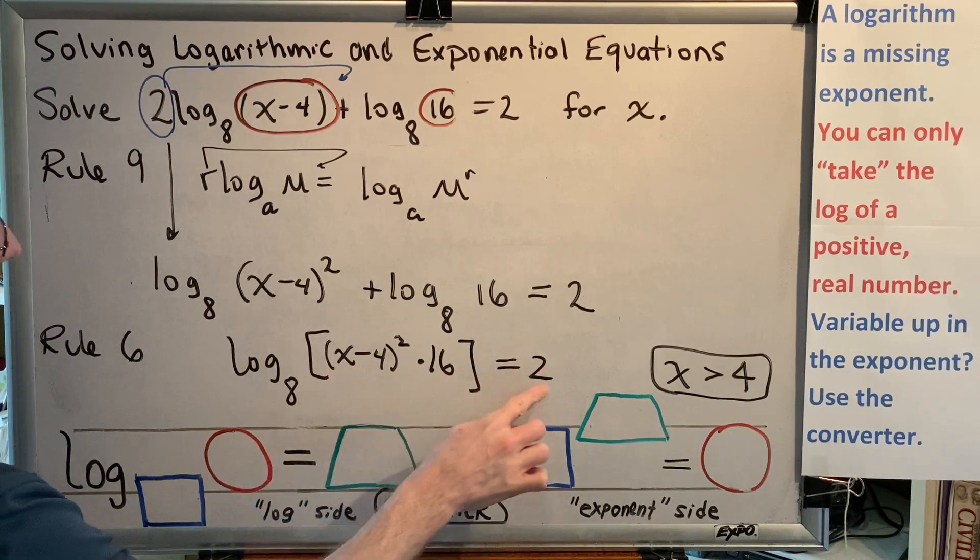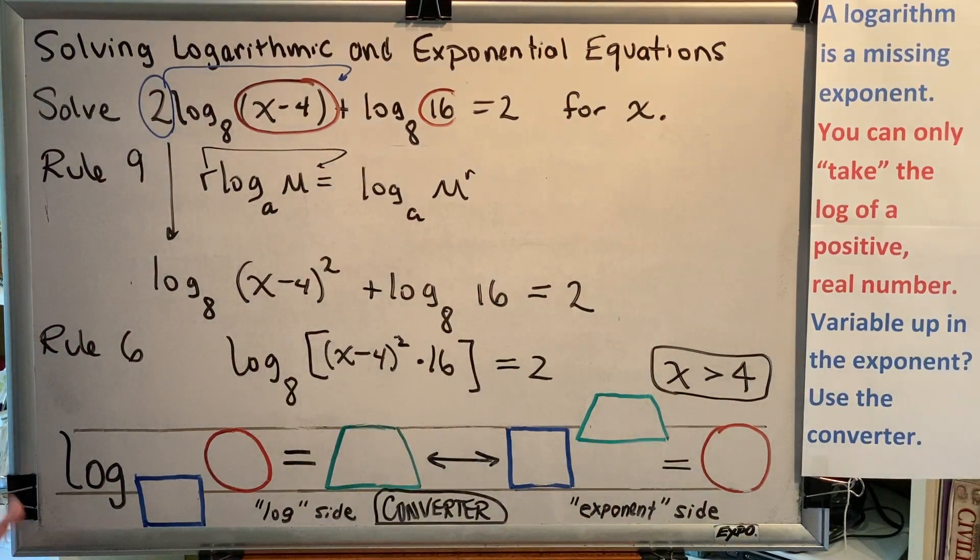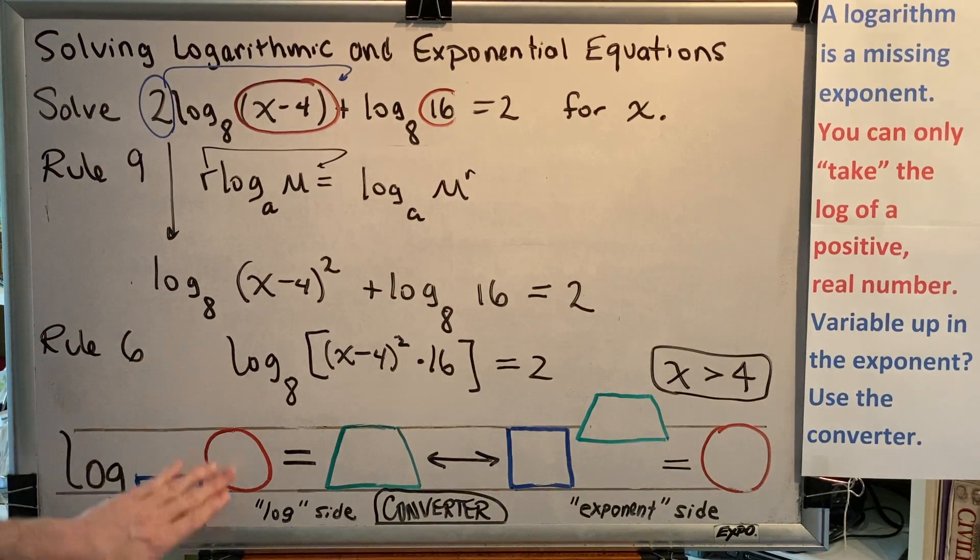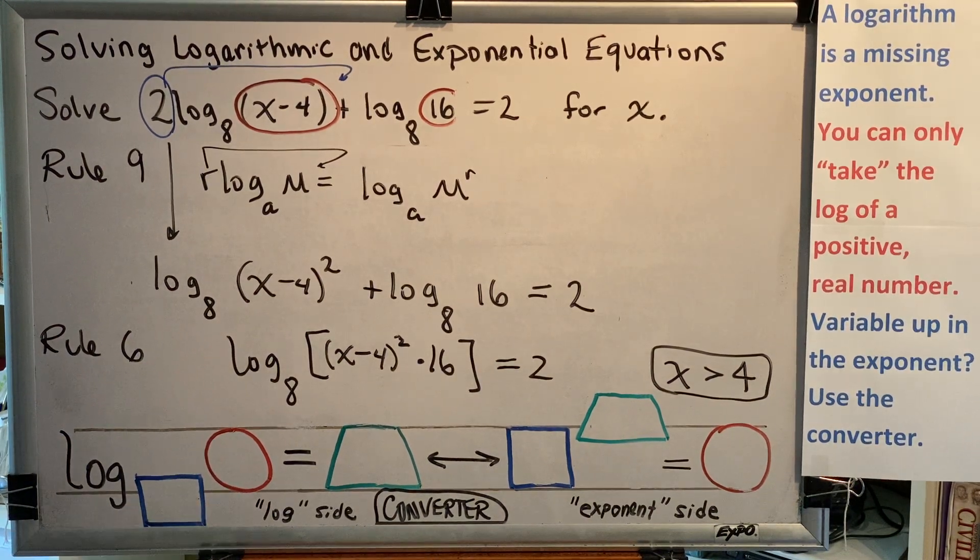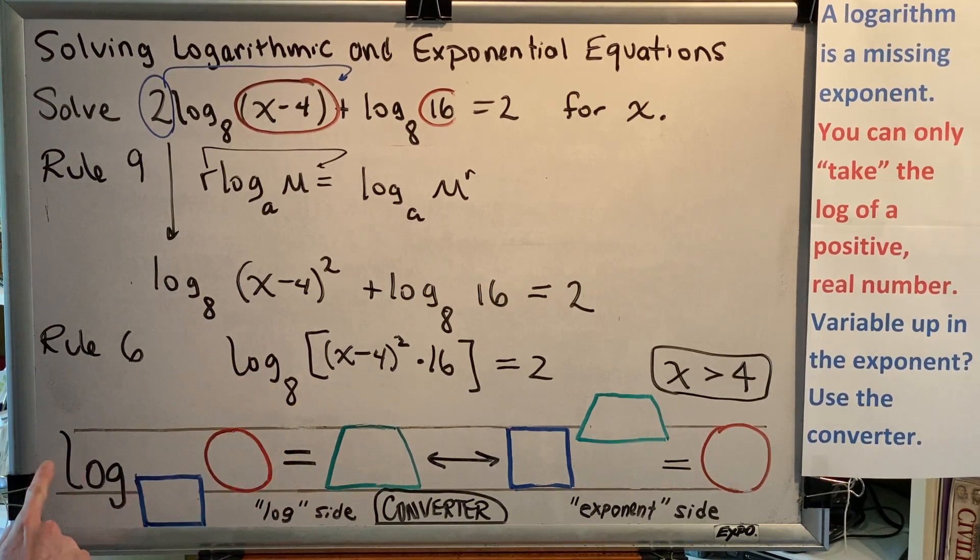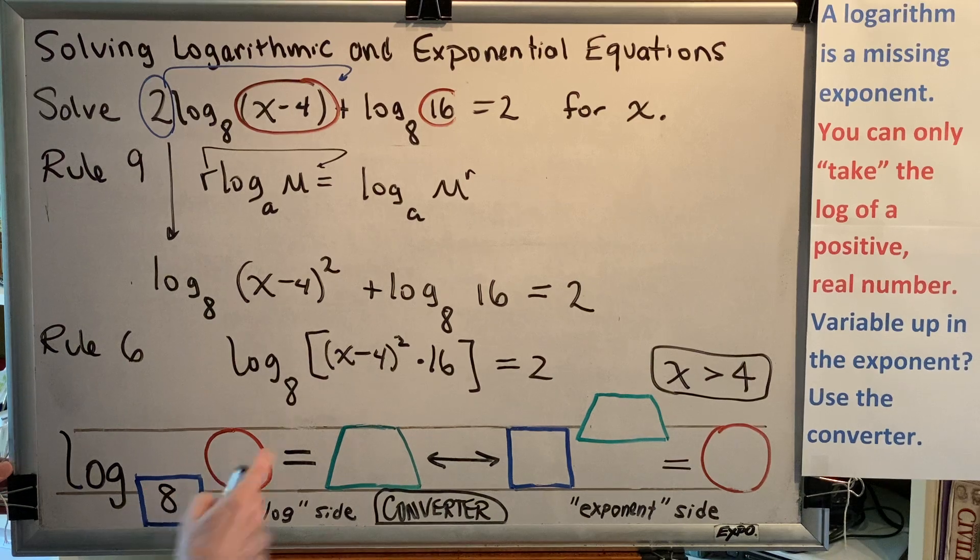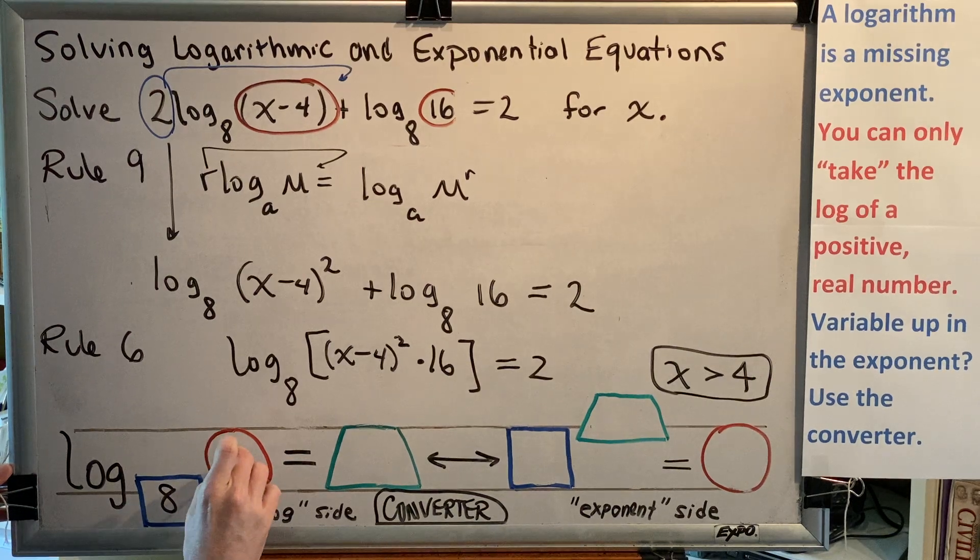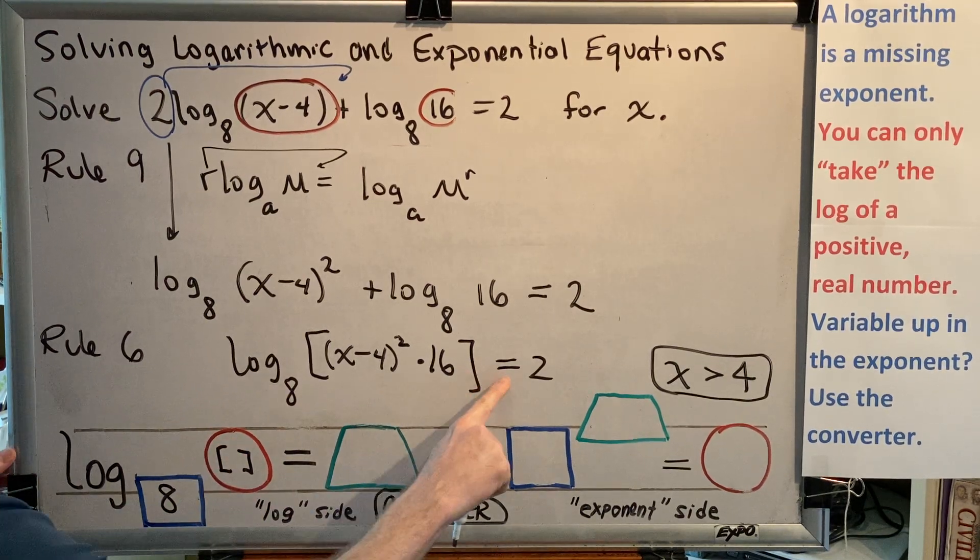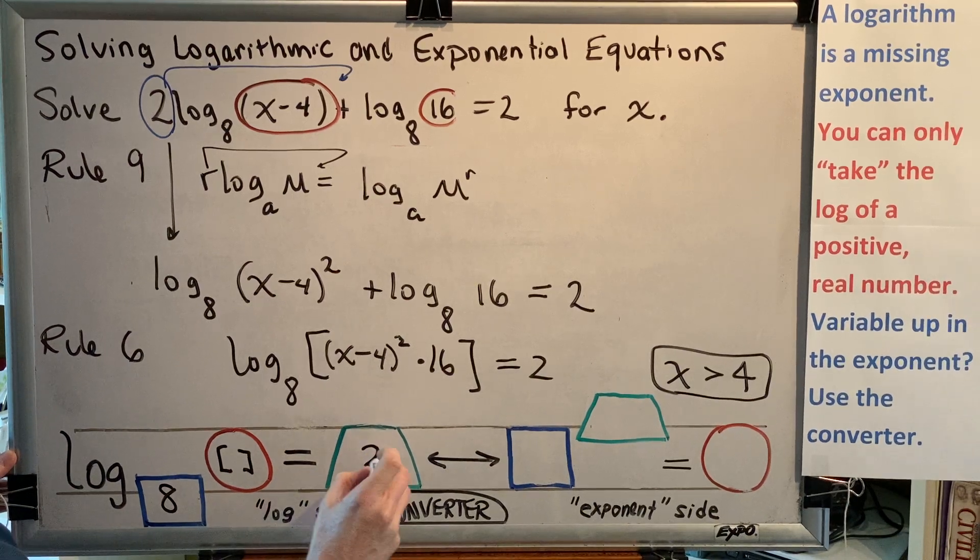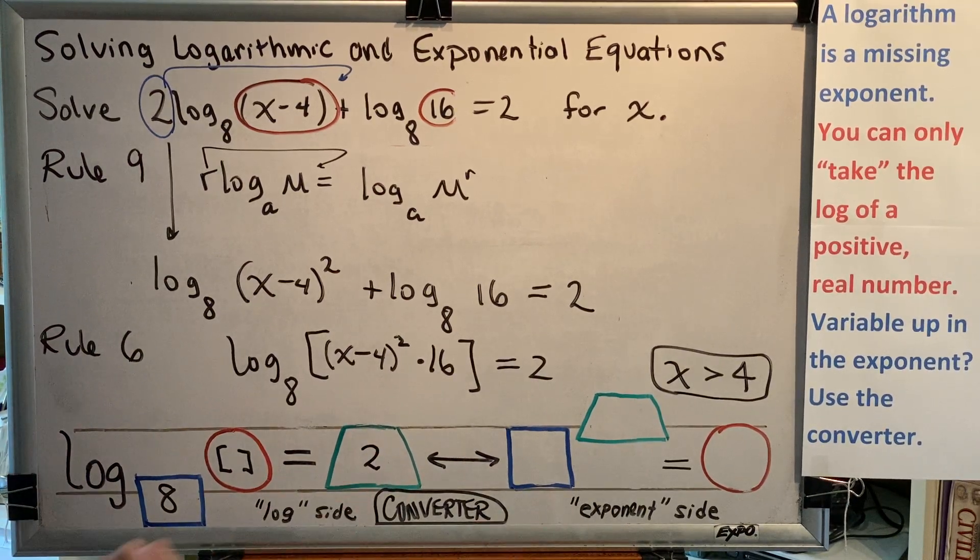one argument, and one exponent. So let's fill in our converter. This is a logarithmic equation, so we use the log side. And we can see that the base is 8, log base 8. So I'm going to write log base 8. We can see that the argument is everything in the brackets, and there's no way I'm going to fit all of that in this little circle. So I'm just going to put brackets, and you'll know what I mean by that. And then on the other side of equals is 2. So on the other side of equals here, we put 2.